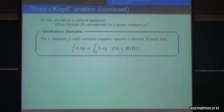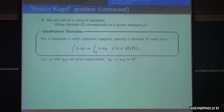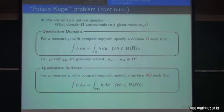We arrive at the notion of quadrature domains: for a given measure mu, if the domain omega satisfies the identity that is a generalized mean value formula for harmonic functions, then we call omega a quadrature domain. The physical meaning is that mu and the domain omega produce the same gravitational potential outside. Similarly, we can define a quadrature surface: for a given measure mu, if a closed hypersurface satisfies the analogous identity with a surface measure, then we call it a quadrature surface. This is our main objective.